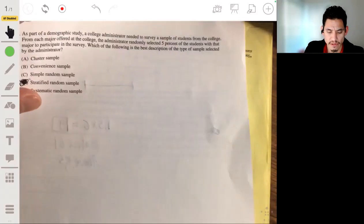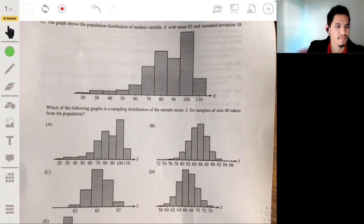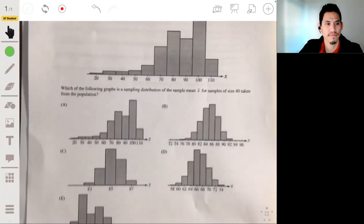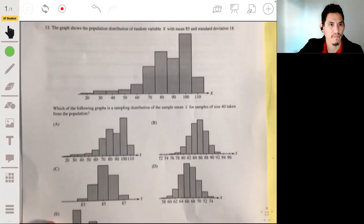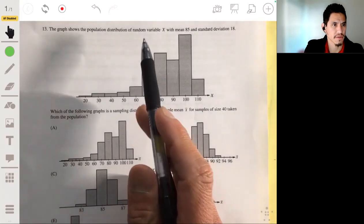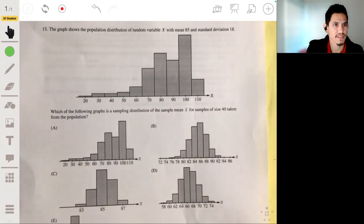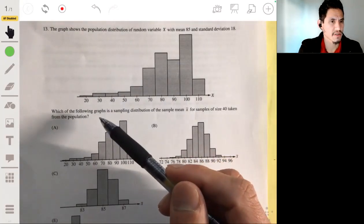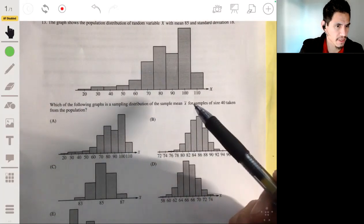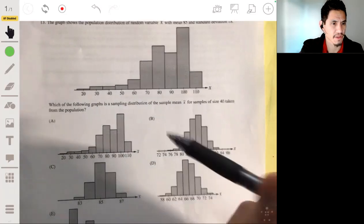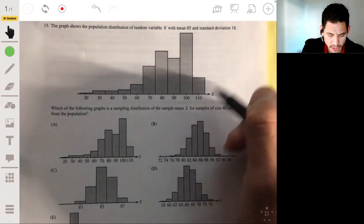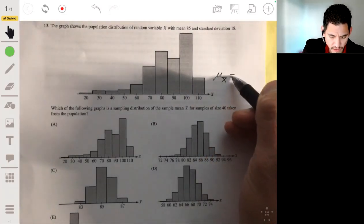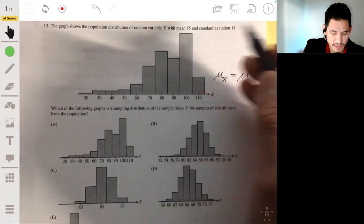By number 13, let's zoom out a little bit on this. Alright, so we got the graph that shows the population distribution of random variable x with mean 85 and standard deviation 18. And we want to find which of the graphs is the sampling distribution of the sample mean x bar for samples of size 40 taken from the population. Okay, so the sampling distribution, the sample mean x bar, so the mean of the sampling distribution of x bar will be equal to the mean of the population. So in that case, it's still going to be 85.